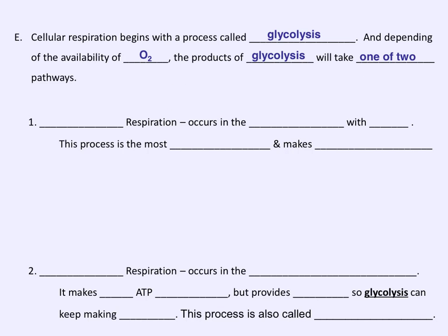Cellular respiration begins with a process called glycolysis. Depending on the availability of O2, the products of glycolysis will take one of two pathways. One pathway is called aerobic respiration. This pathway occurs in the mitochondria if oxygen is readily available, and this is the most efficient way to make lots and lots of ATP.